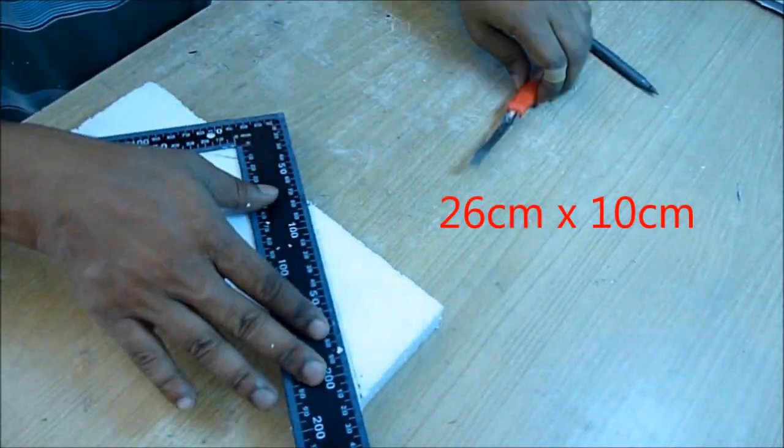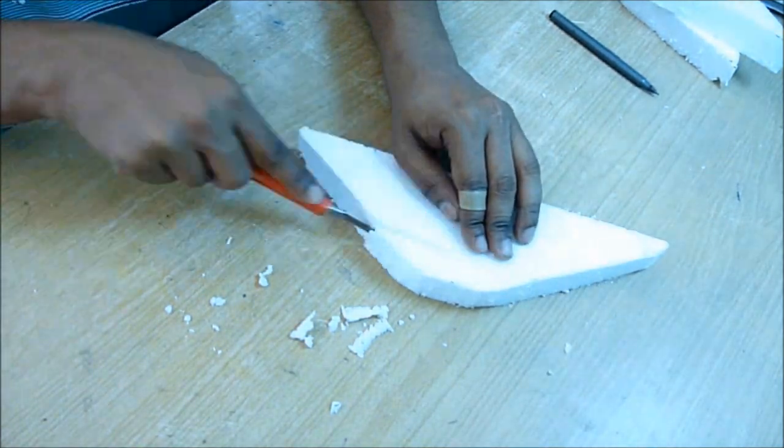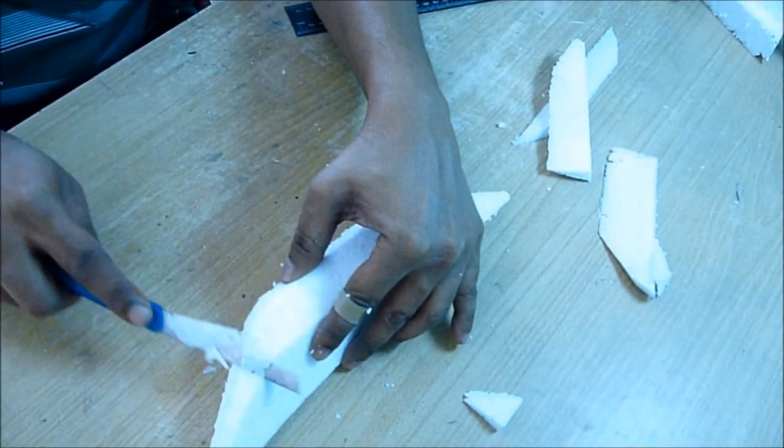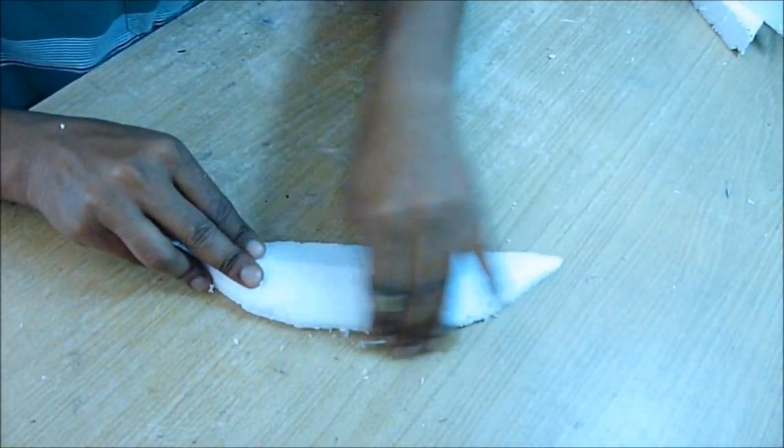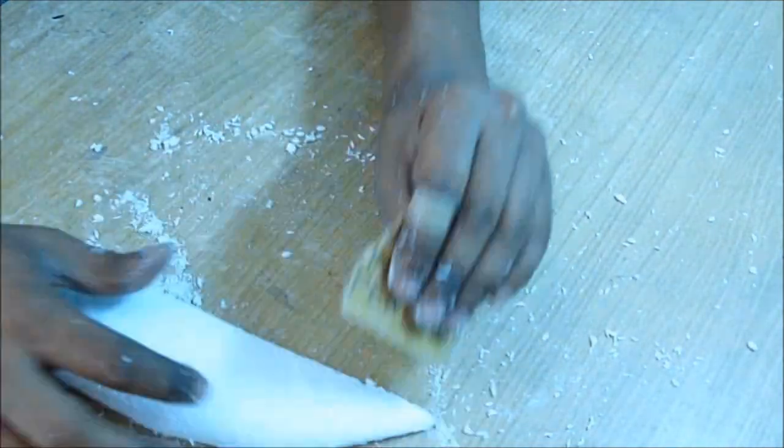For that, take one inch thermocol and cut the wing first. Then give all the edges a smooth and curved shape, making it aerodynamic using sandpaper.